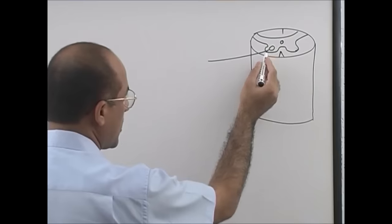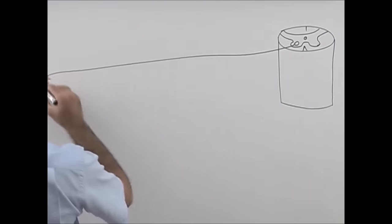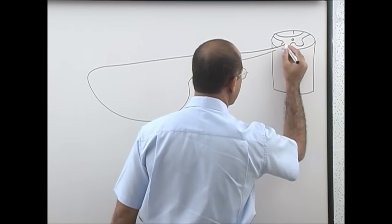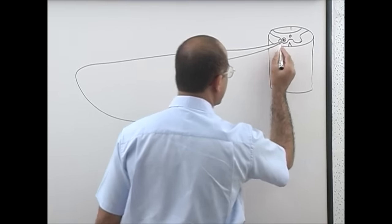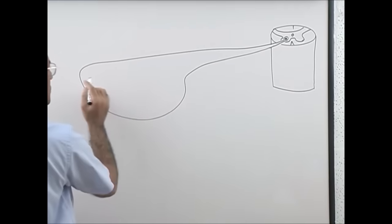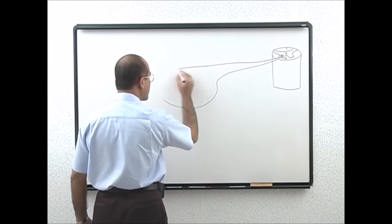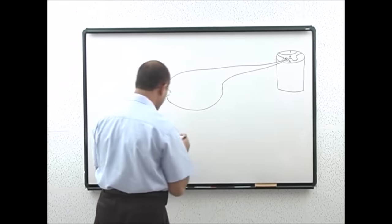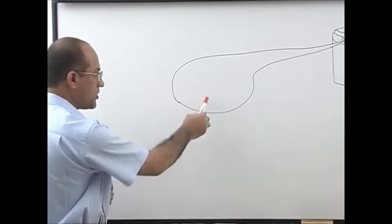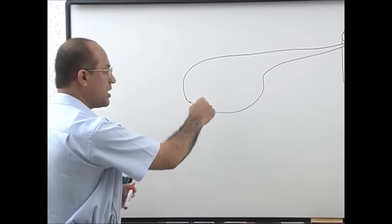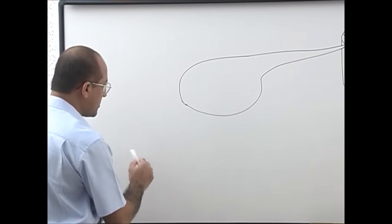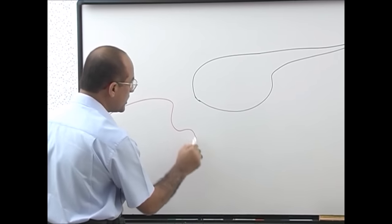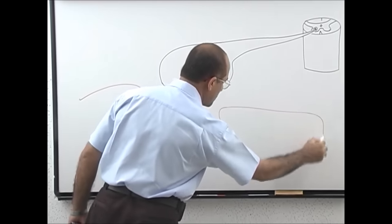A neuron comes out with a cell body and an axon. The ending of this neuron is called the nerve terminal, and this nerve terminal connects with and stimulates the muscle cell. Where the muscle cell comes near the nerve ending, it makes multiple folds — this is the motor end plate region of the muscle cell membrane.